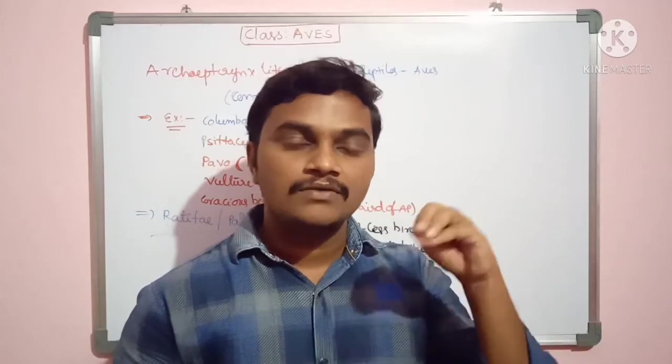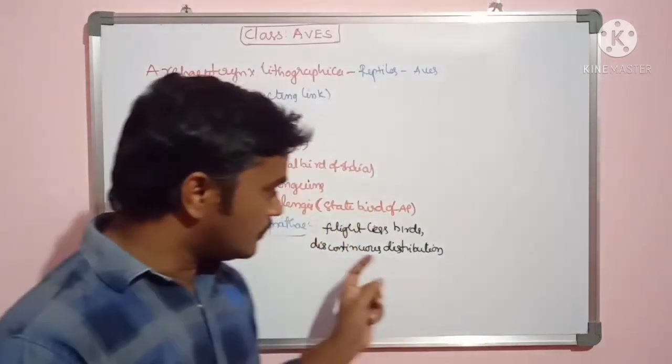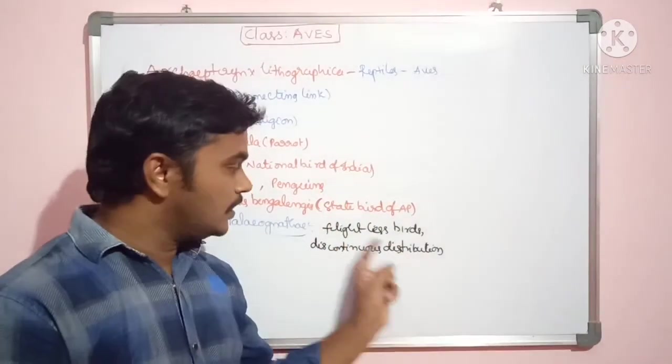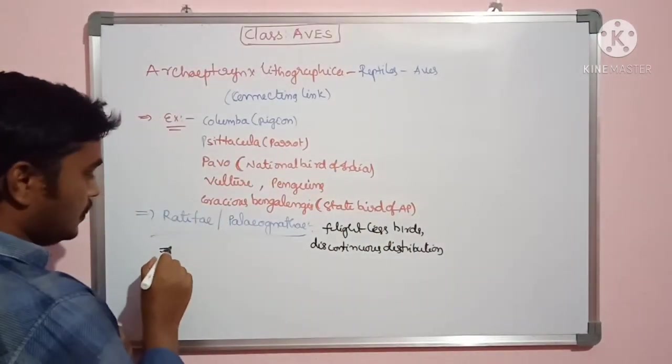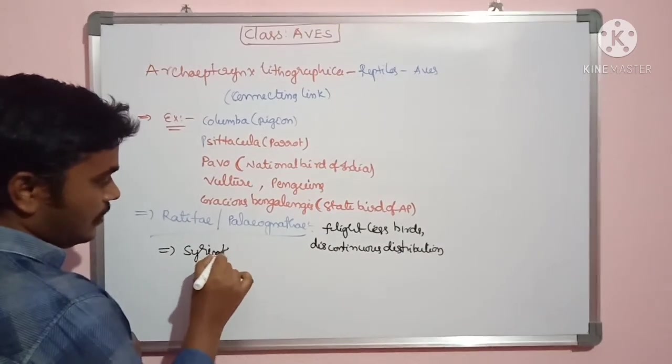What is discontinuous distribution? If an organism is present not worldwide but in some confined areas, local areas of particular regions, that is discontinuous distribution.